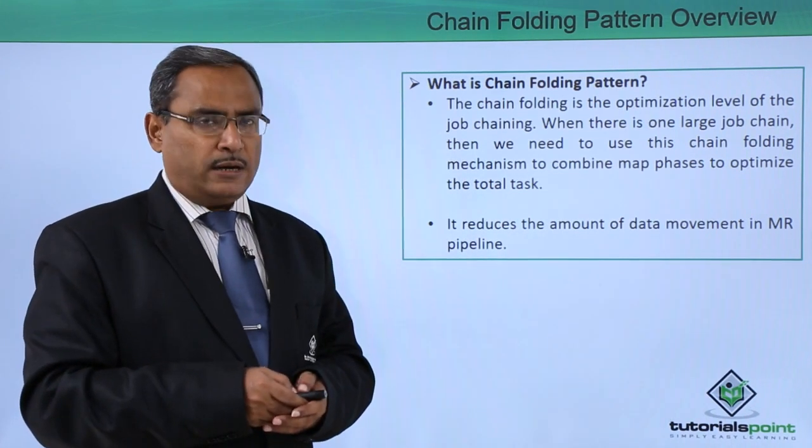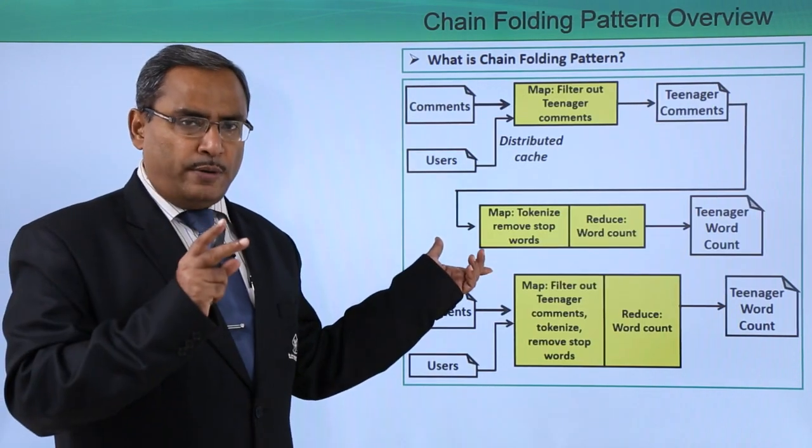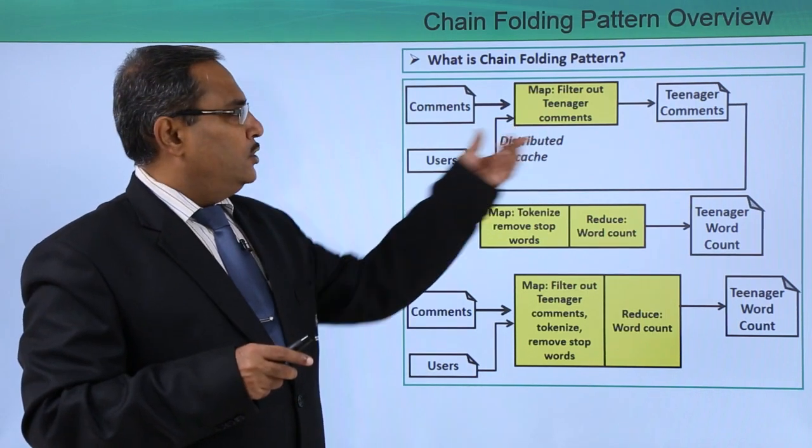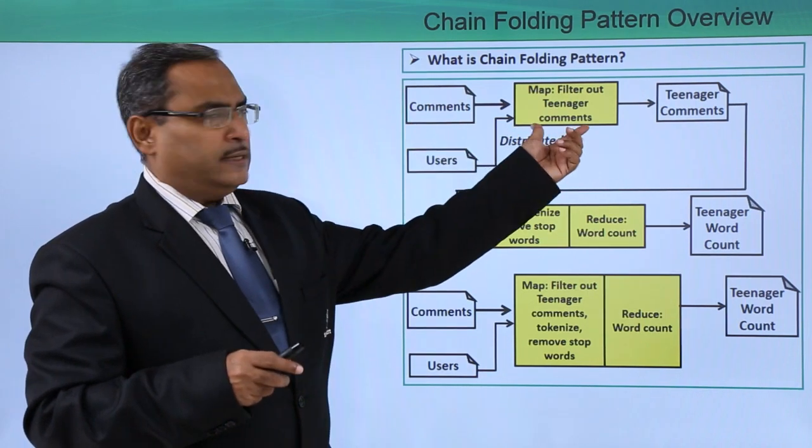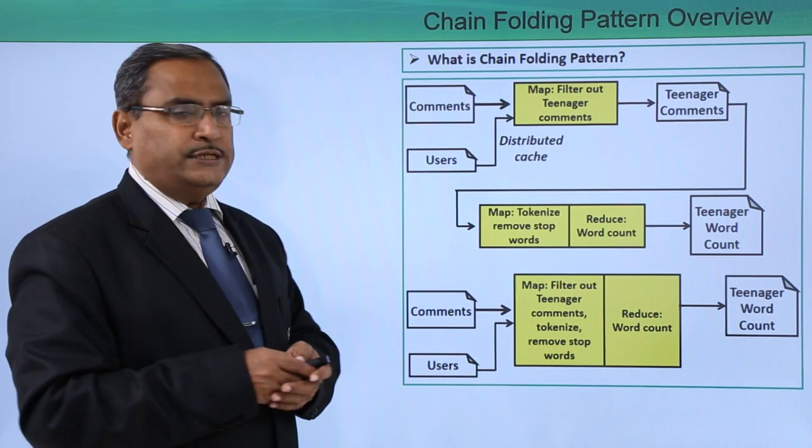Let us give you one example for the better concept. Here you can find we are having two map reduce tasks. Comments are coming and then here in this phase, in the mapper phase, we are doing filter out teenager comments.